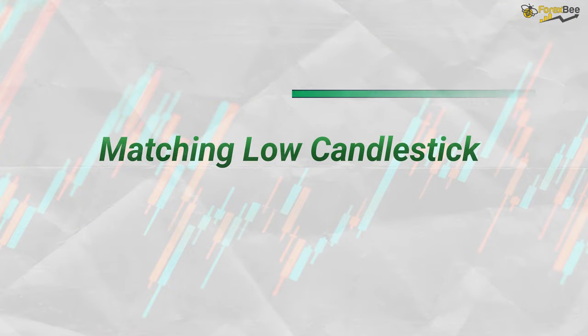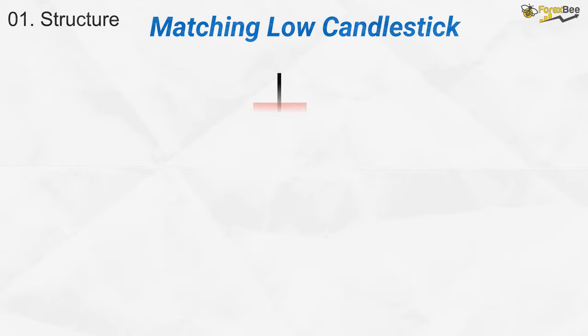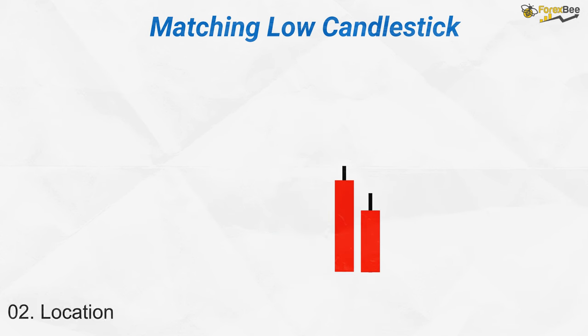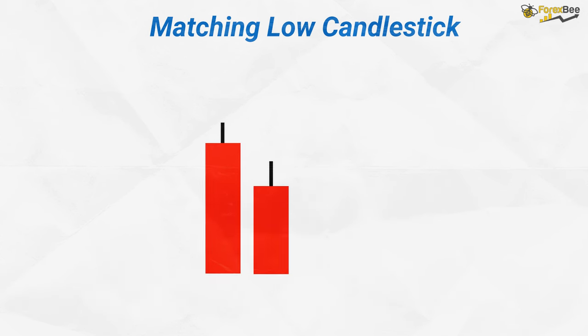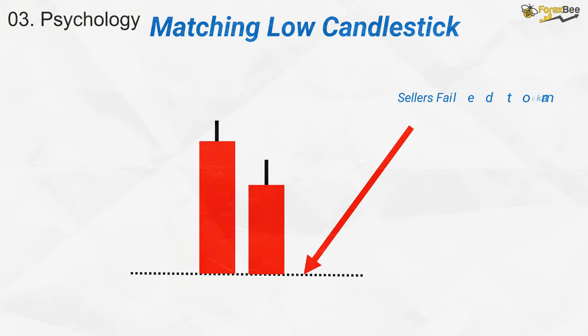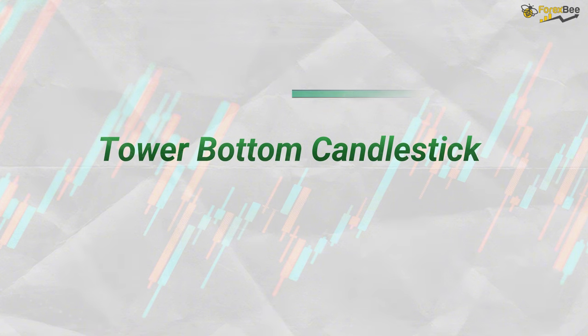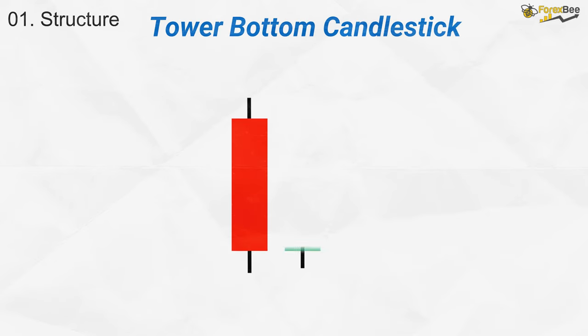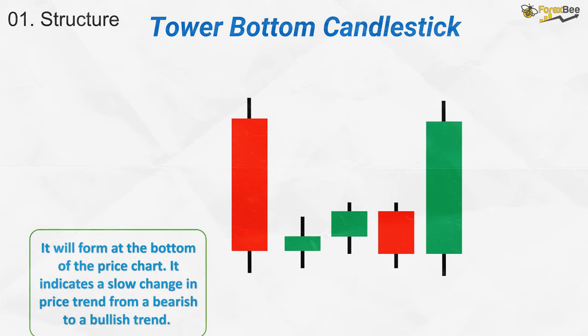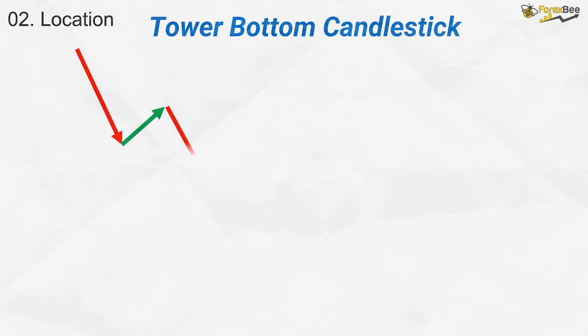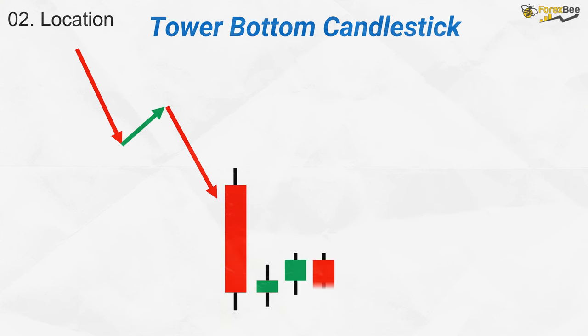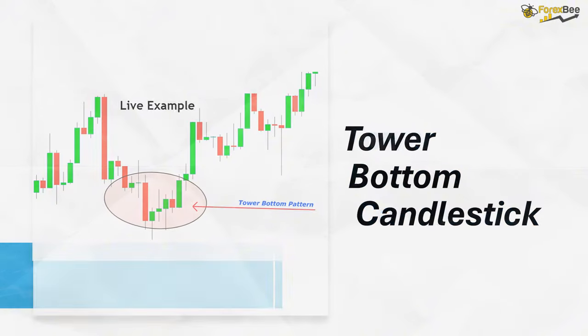Now, let's talk about the matching low candlestick pattern. This is a bullish reversal pattern that typically forms at the bottom of a downtrend. Its structure consists of two consecutive bearish candles, both closing at the same or nearly identical low. The first candle shows strong selling pressure continuing the downtrend. However, the second candle, despite being bearish, fails to close below the low of the first candle, signaling that sellers are struggling to push prices lower. This pattern usually forms near support levels where downward momentum starts to weaken. The psychology is that sellers couldn't break past the previous low, indicating a loss of selling strength and suggesting a potential reversal with buyers preparing to step in.